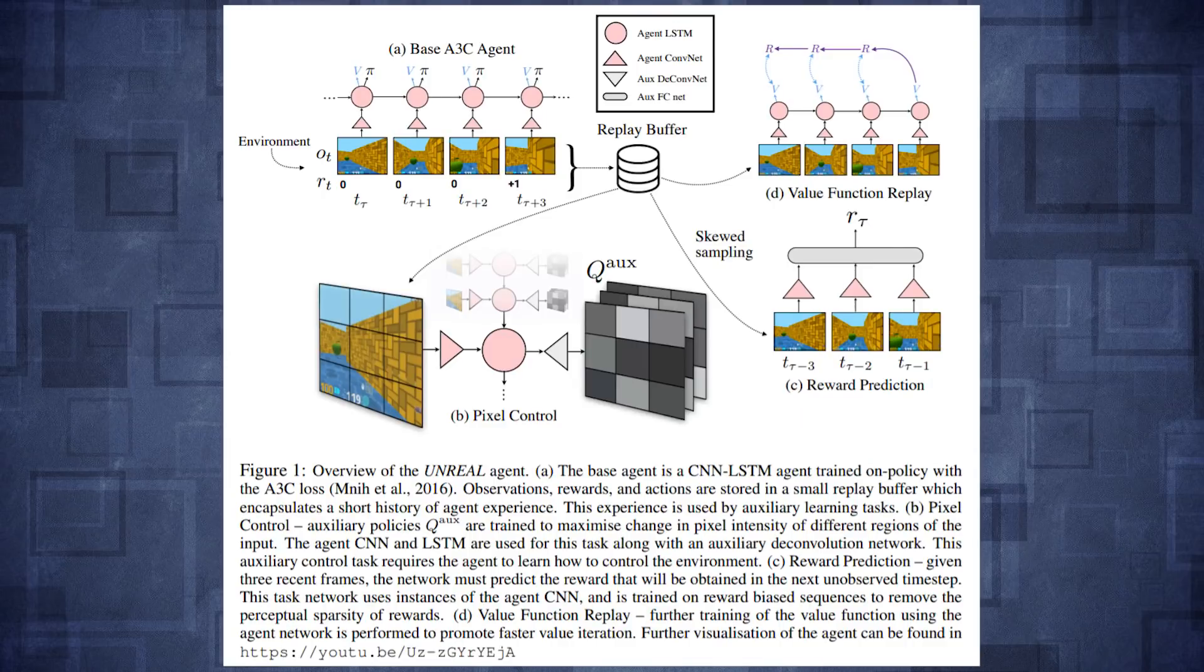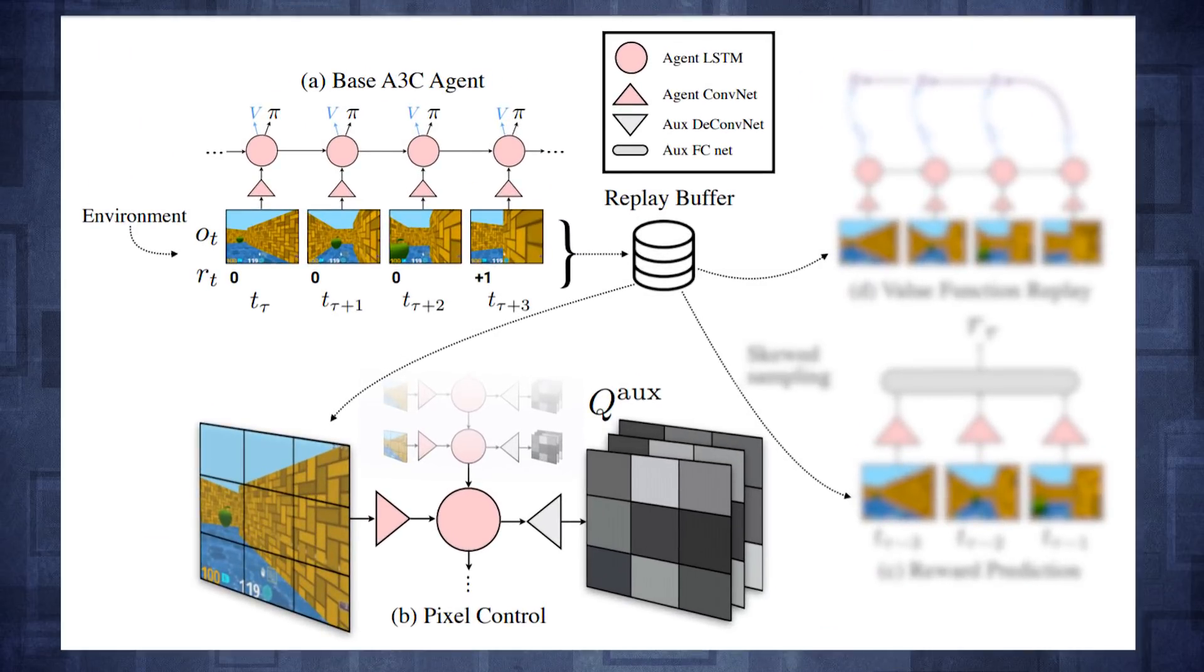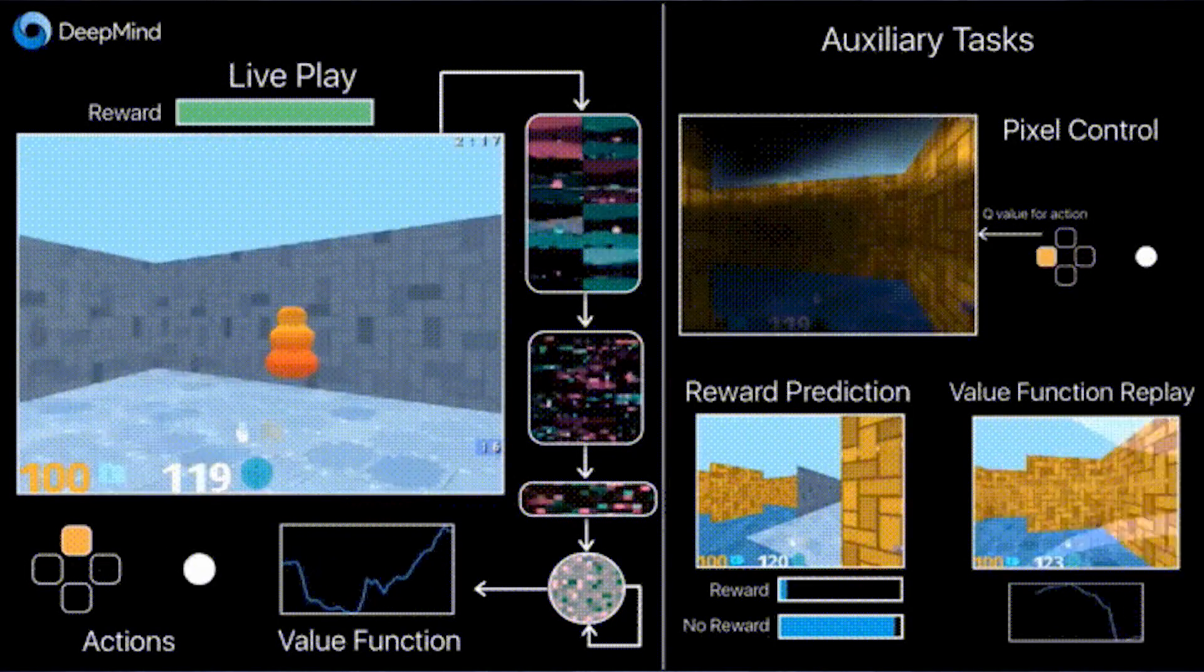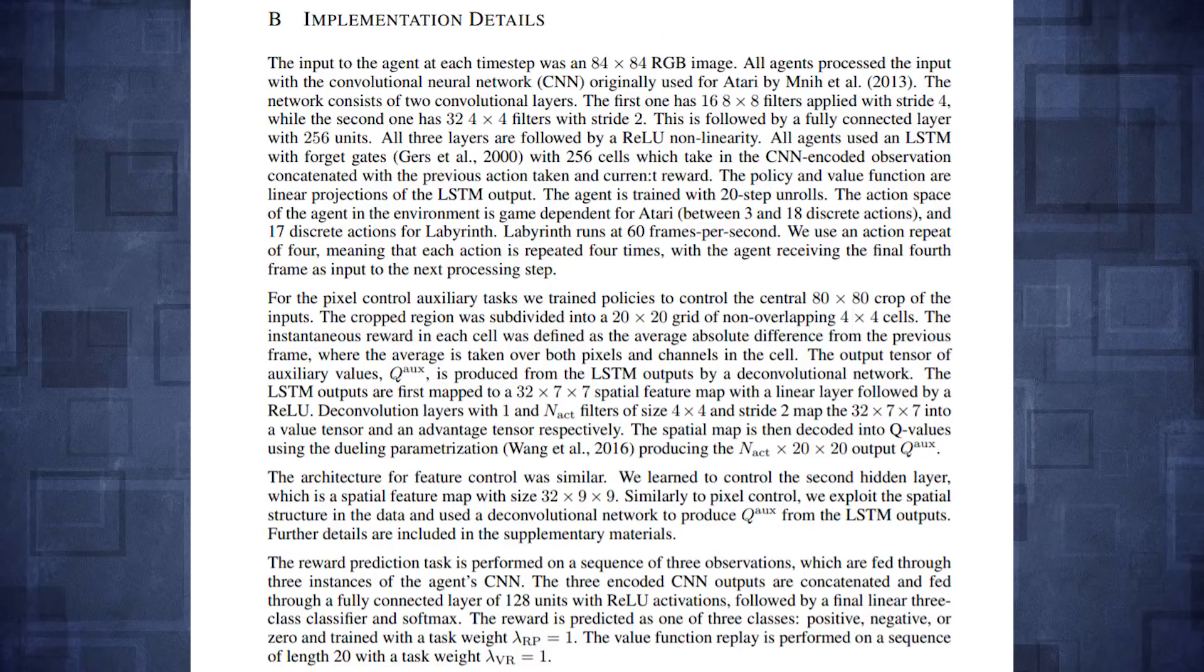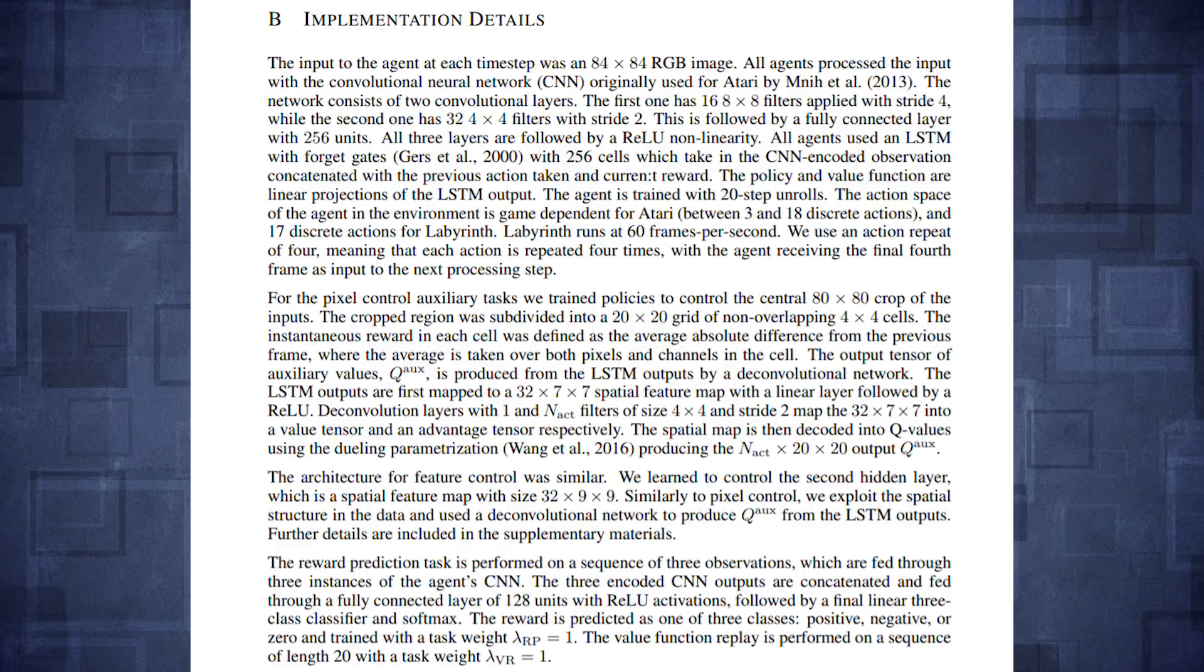So first the agent learns to do what they call pixel control. So given a frame from the environment it uses the main feature extraction pipeline and it learns a separate policy to maximally change the pixel intensities in some parts of the input images. So for example it could learn that by looking up at the sky for example this completely changes all the pixel values in the input scene. And in their suggested implementation the input frame is divided into a small number of grids and a visual change score is computed for each grid.